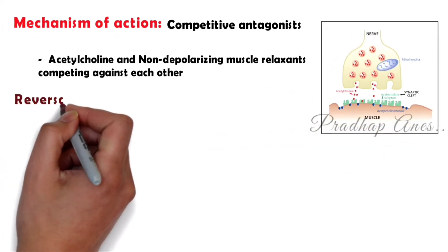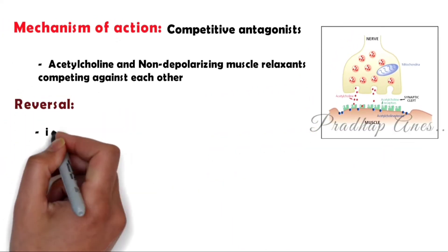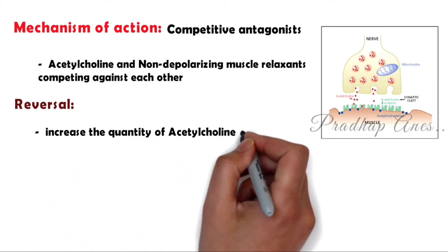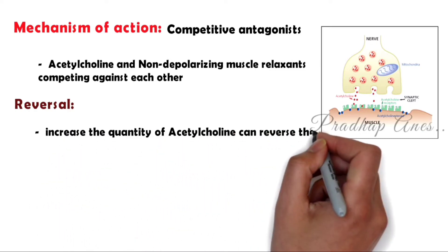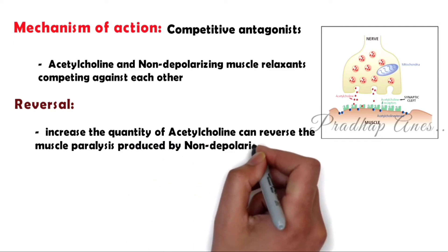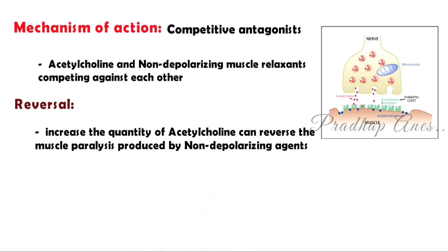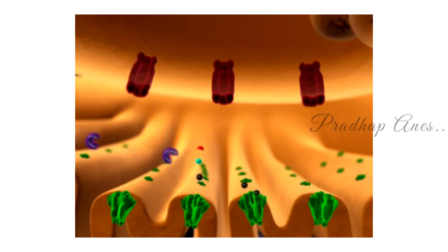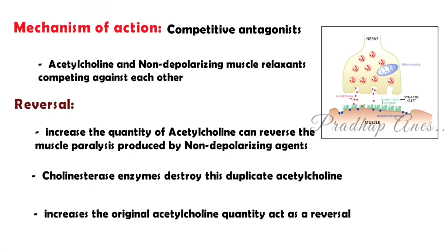Reversal: If we increase the quantity of acetylcholine, we can reverse the muscle paralysis produced by non-depolarizing agents. Cholinesterase enzymes destroy this duplicate acetylcholine. Using a cholinesterase inhibitor like neostigmine increases the original acetylcholine quantity, acting as a reversal.